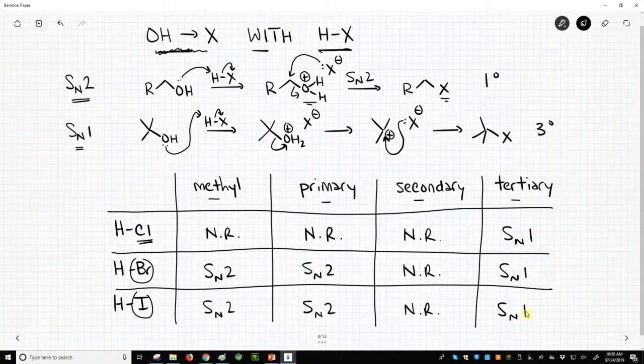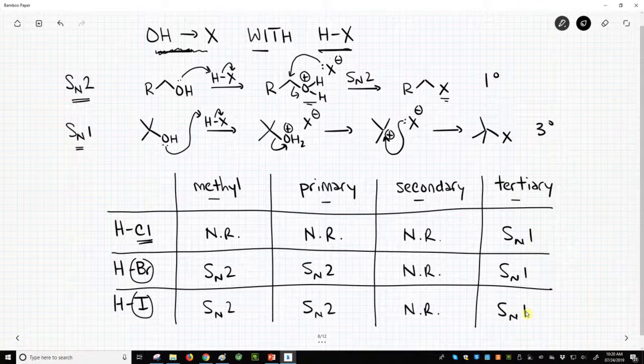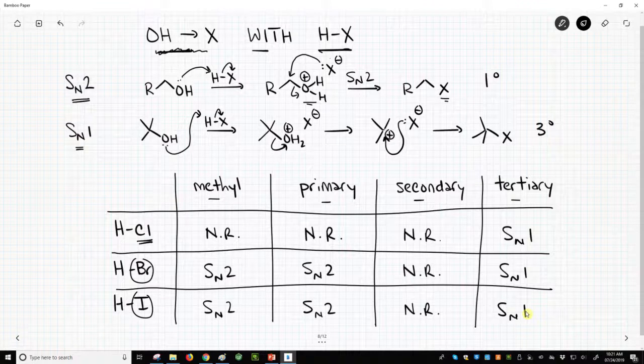So these are the scope and the limitations of using HX – hydrochloric, hydrobromic, or hydroiotic acid – in reactions with alcohols to form the corresponding halides.